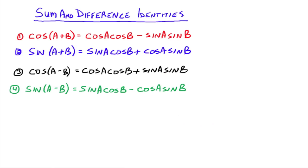Let's summarize the sum and difference identities. For cosine: cos(A+B) = cosA cosB − sinA sinB; cos(A−B) = cosA cosB + sinA sinB. For sine: sin(A+B) = sinA cosB + cosA sinB; sin(A−B) = sinA cosB − cosA sinB. Notice that the cosine identities always go cosine-cosine, sine-sine, while the sine identities alternate sine-cosine, cosine-sine. Also note that for cosine, the sign in the identity is opposite to the sign in the angle — but for sine, the sign carries over directly.